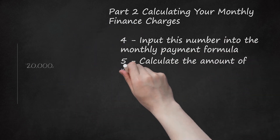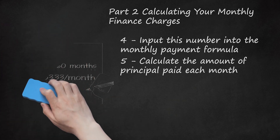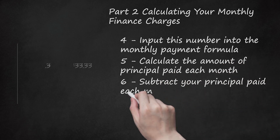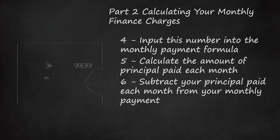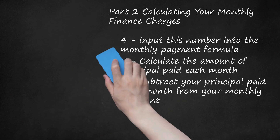Step 5: Calculate the amount of principal paid each month. This is done by dividing your principal amount by the duration of your loan in months. For our example, $20,000 ÷ 60 months equals $333.33 per month. Step 6: Subtract your principal paid each month from your monthly payment. In our example, $409.36 − $333.33 equals roughly $76. So with this loan agreement, you would be spending $76 per month in interest payments alone.